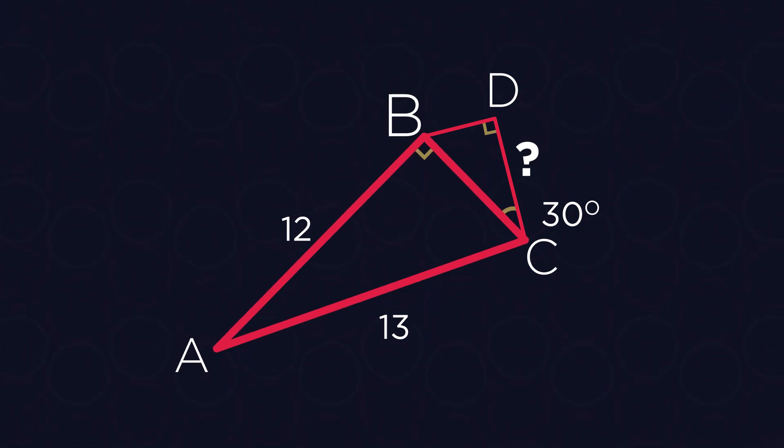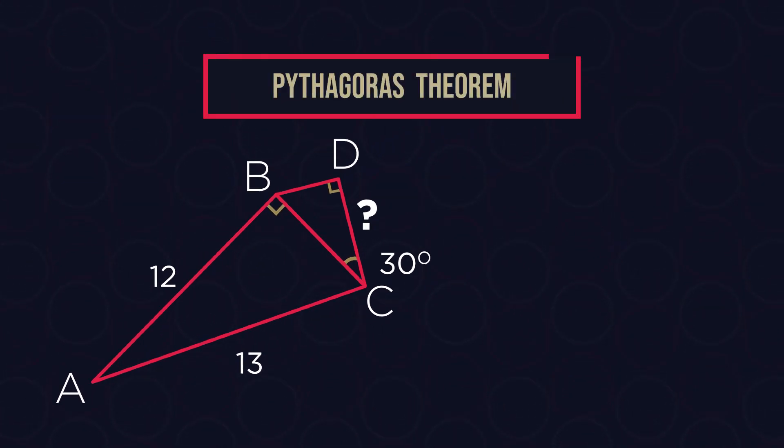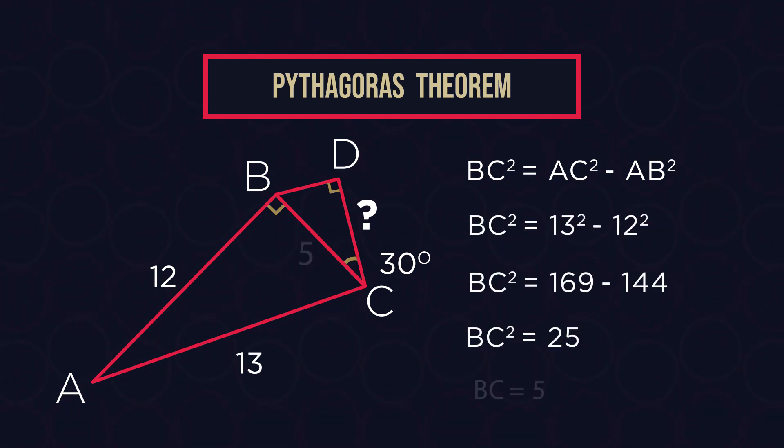Let's look at triangle ABC first. We already know two sides, AB and AC, so we can find CB using Pythagoras Theorem. Based on Pythagoras Theorem, we get that BC squared equals the difference between AC squared and AB squared. So BC equals 5.